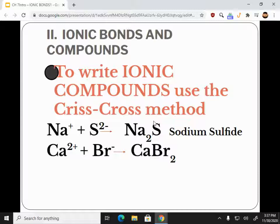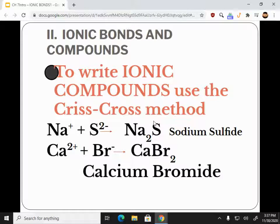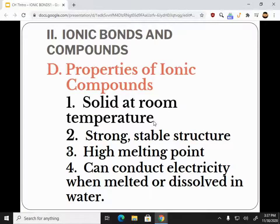You can also use Lewis dot structures, but realize that in ionic compounds atoms are donating electrons, not sharing them — that's how covalent bonds work, and we'll talk about covalent bonds next week. Calcium bromide is CaBr₂, and sodium sulfide, because sulfide is a 2− charge, is Na₂S. The properties of ionic compounds: they're solid at room temperature and have a very high melting point — have you ever seen salt melt? It takes a very high temperature.